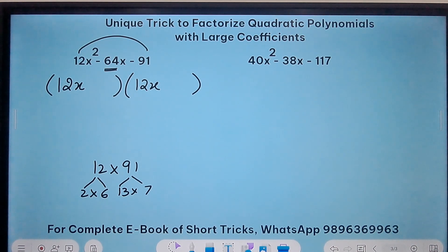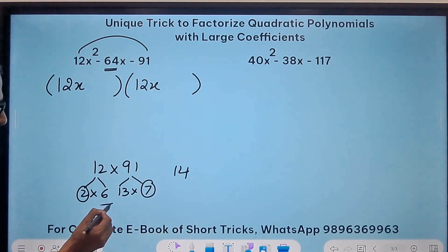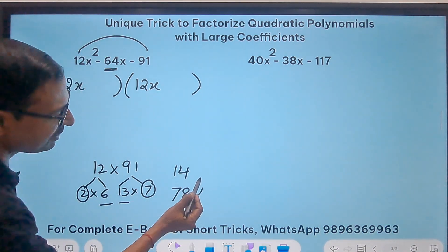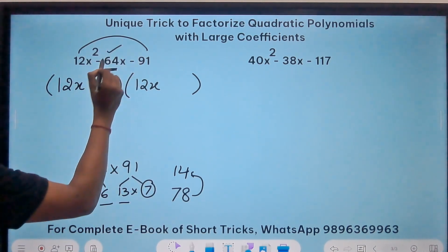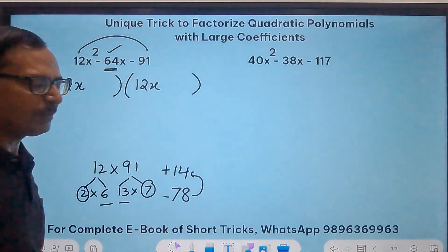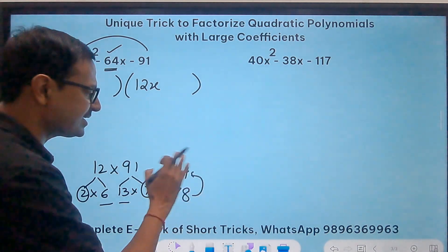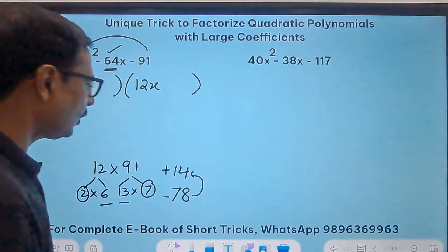And now let's combine 2 and 7 which gives me a 14 and combine 13 and 6 which is 78. Now the difference between 78 and 14 is 64, and so since this is negative, the larger one will be negative and smaller one will be positive. Now that is the only thing you need to understand here. If you understand this step then the factorization is not going to consume more than 10 seconds.